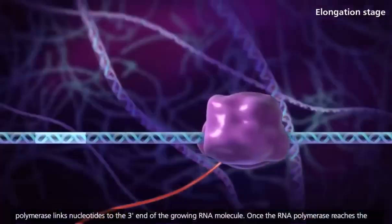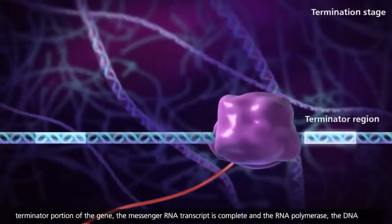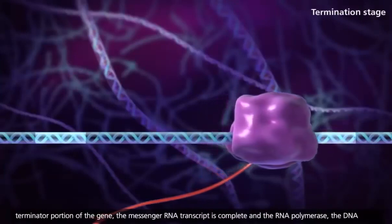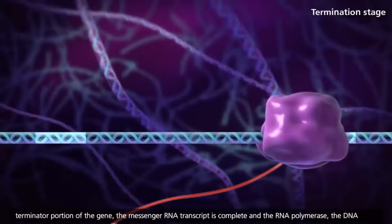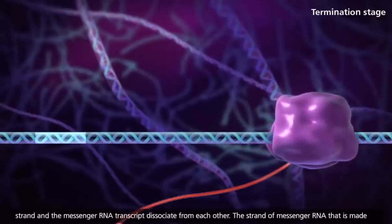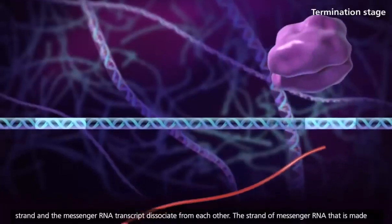Once the RNA polymerase reaches the terminator portion of the gene, the messenger RNA transcript is complete, and the RNA polymerase, the DNA strand, and the messenger RNA transcript dissociate from each other.